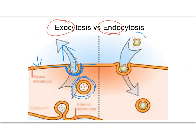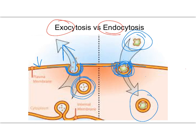Endocytosis is basically the opposite. A large molecule causes the membrane to form a small pit or invagination, which eventually closes itself off to form a vesicle. The membrane seals — you can't have a hole in your cell membrane — and the vesicle floats off into the cytoplasm and can go wherever it's needed within the cell. Both of these processes require energy.